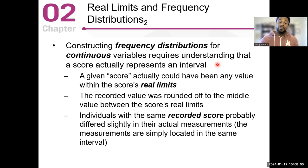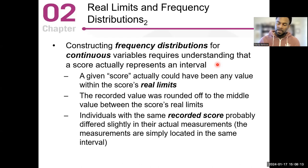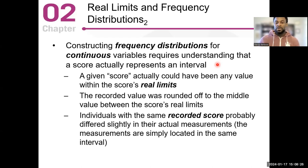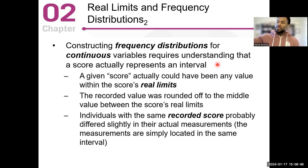The recorded value was rounded off to the middle value between the score's real limits. If I got a 50.3, I round it down to 50. Points do matter, but you round down to that real limit of 50. Individuals with the same recorded score probably differ slightly in their actual measurements — the measurements are simply located in the same interval. So if I am five feet seven and three-quarters, and somebody is five feet seven and seven-eighths, we're probably going to round both up to five eight. They're very different values but we're just in that particular area.